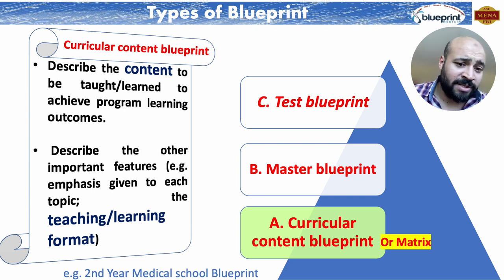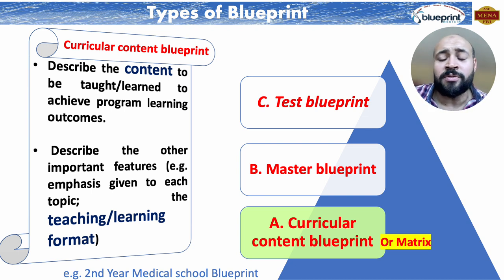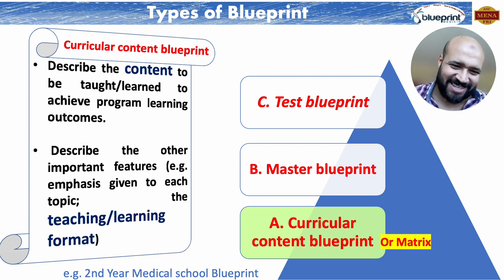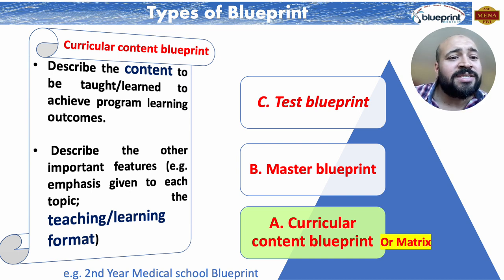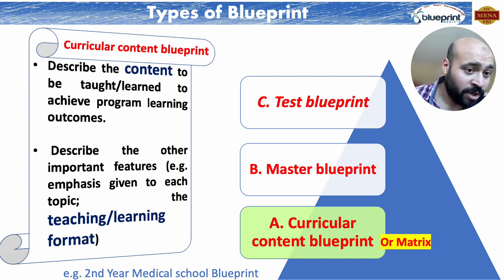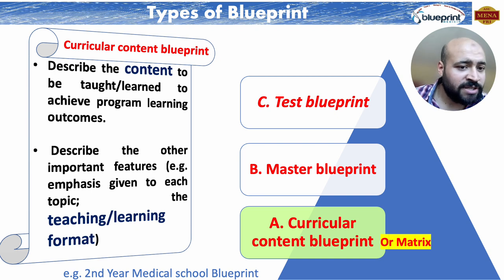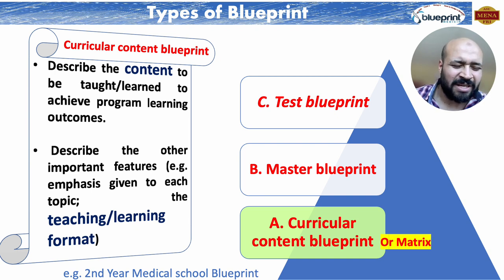What are the types of blueprint? Let's start from the basics: the curricular or content blueprint — in other words, the matrix. The curricular blueprint describes the content that has been taught and achieved across the program. It describes other important features like emphasis given on a certain topic and the teaching and learning format.